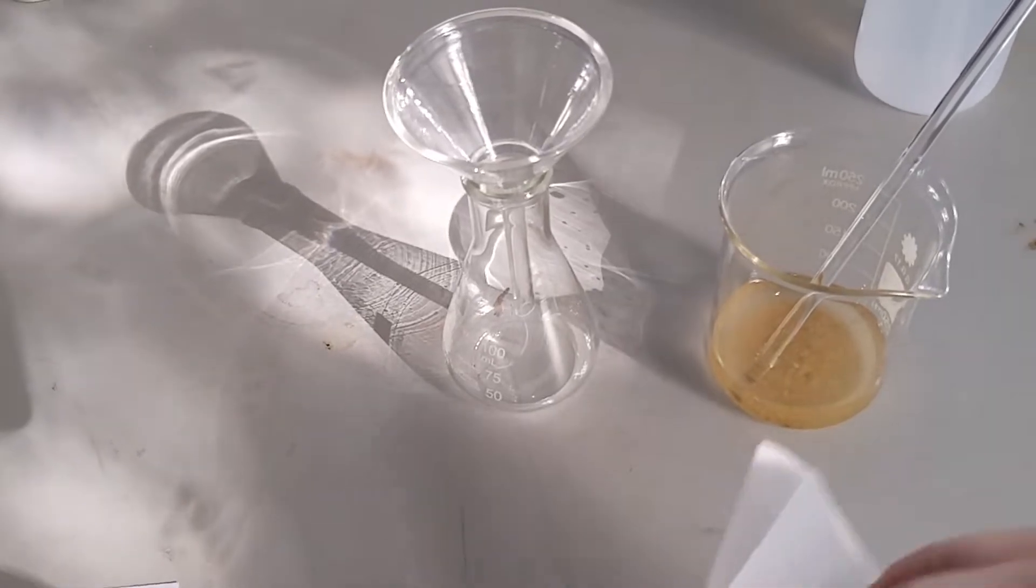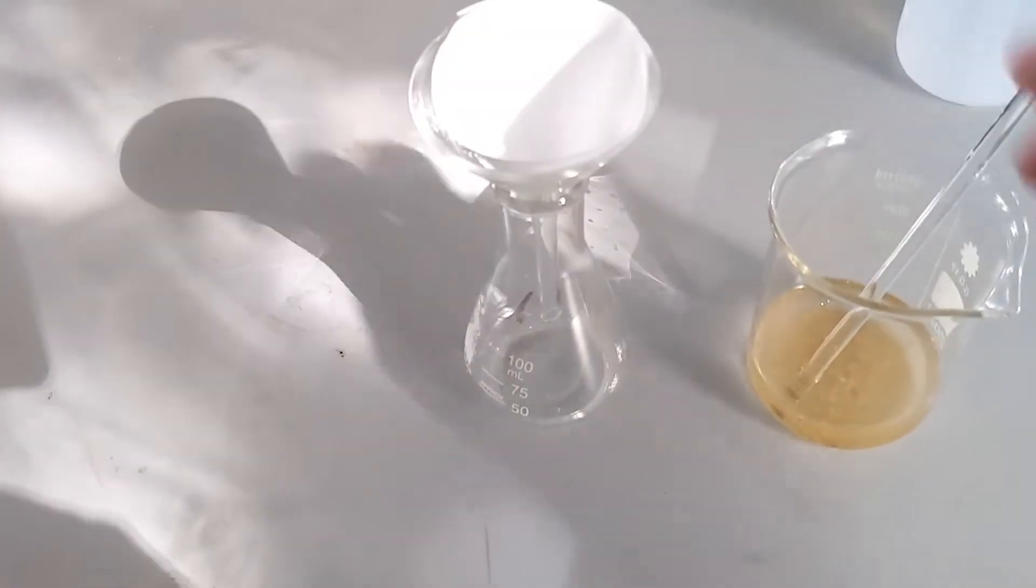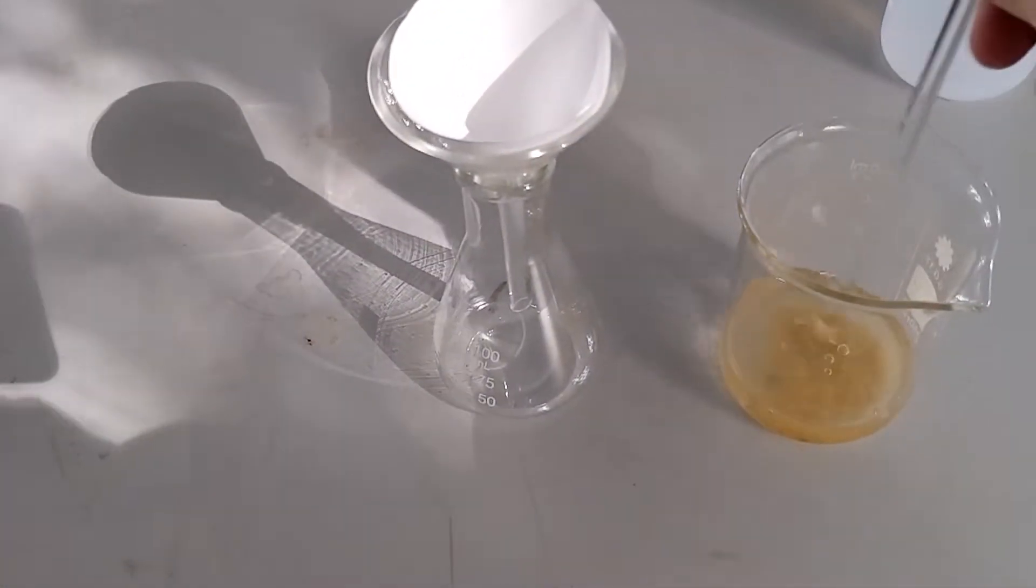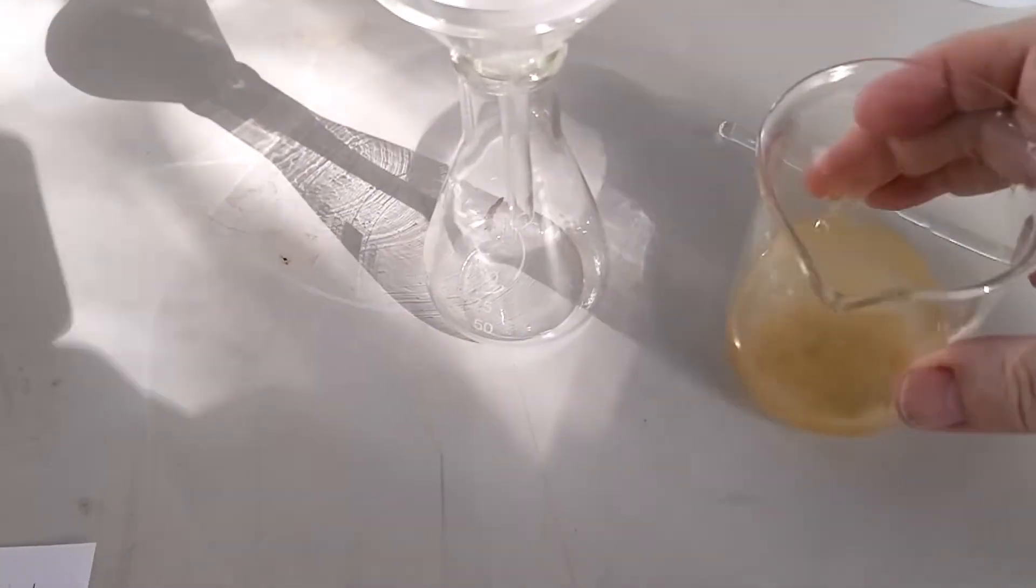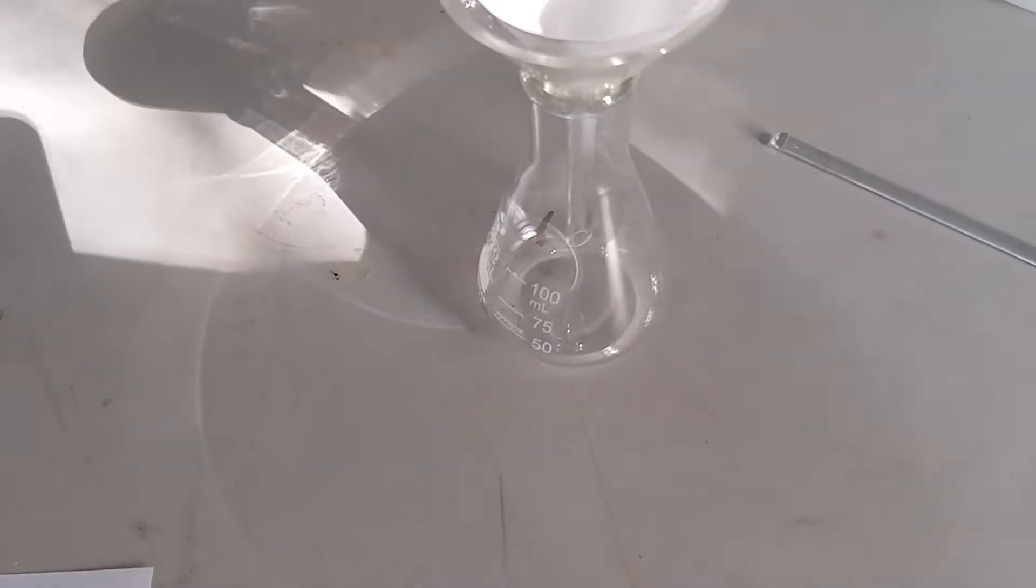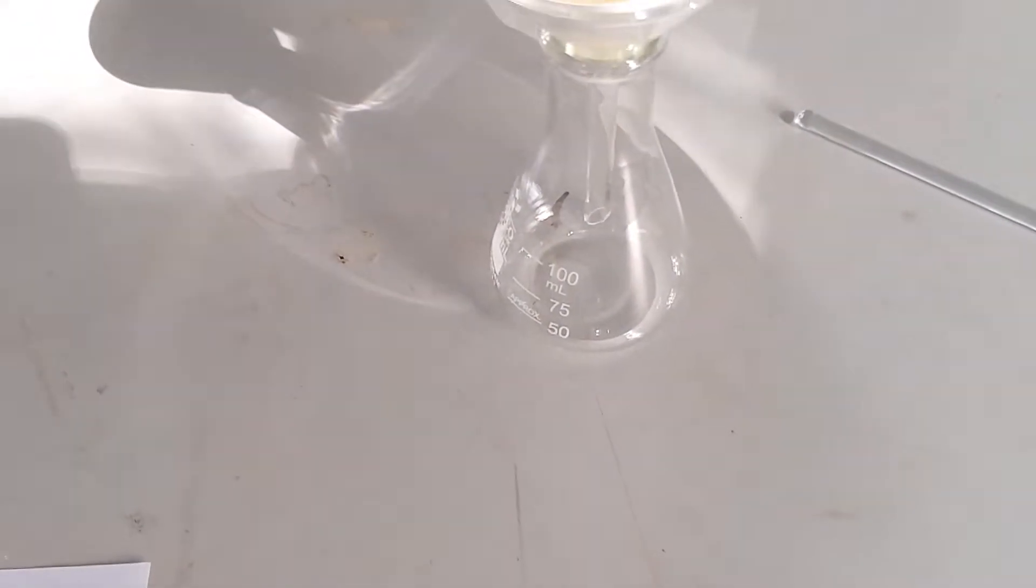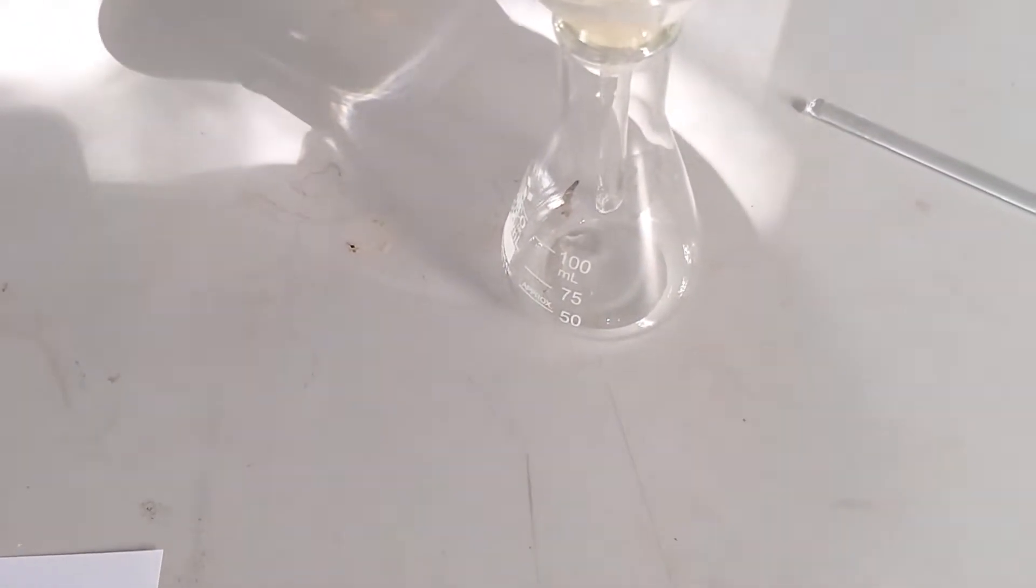Place the funnel in a conical flask. In goes the filter paper. Remove the glass rod and pour the mixture into the top, into the filter paper.